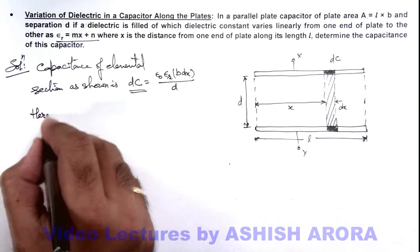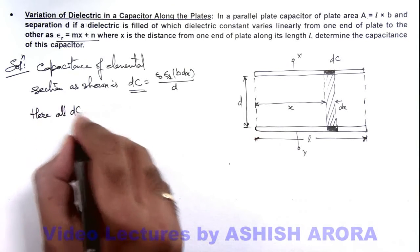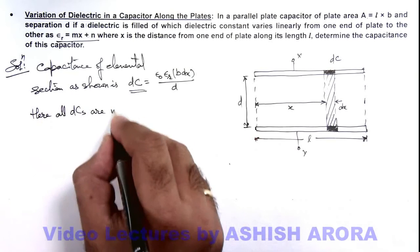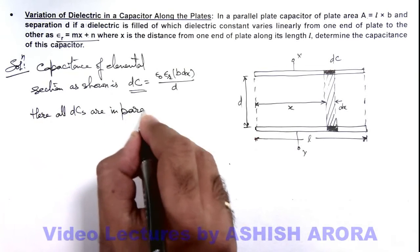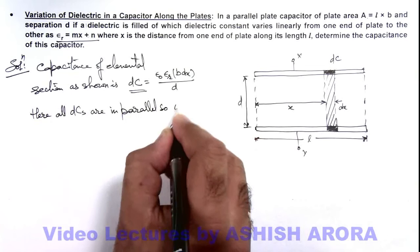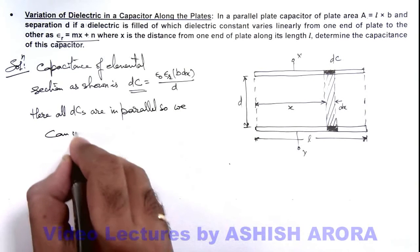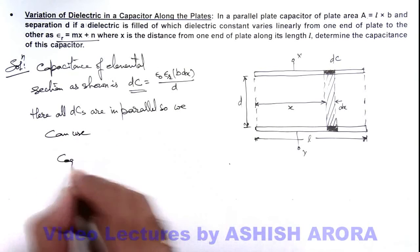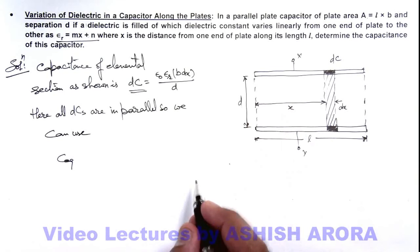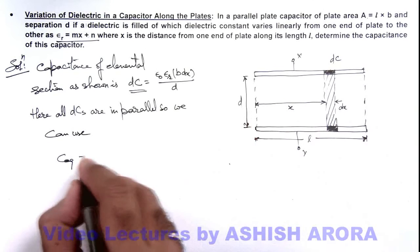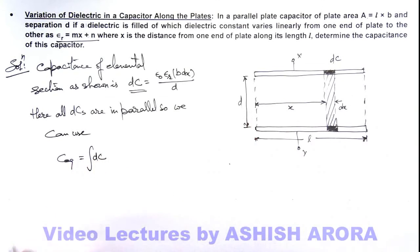So we can write here, all dc's are in parallel, so we can use C equivalent across terminals x and y as dc₁ + dc₂ and so on, which can be written as integration of dc.